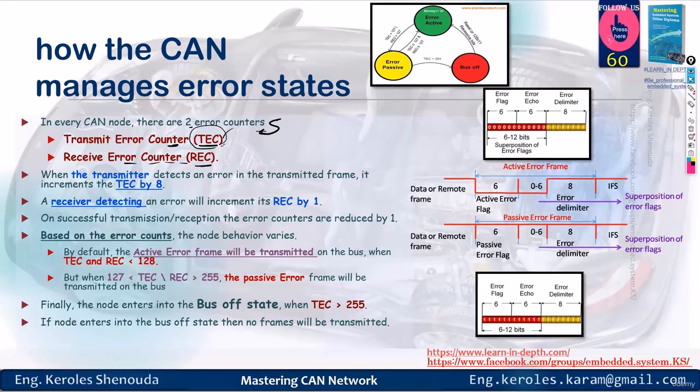If an error occurs during transmission, the transmission counter increases by eight. We'll dive deeper into that later. And if you receive an error, you increase the reception error counter by one.